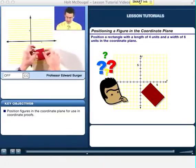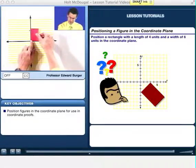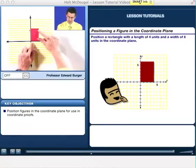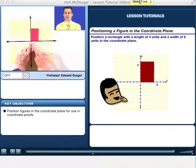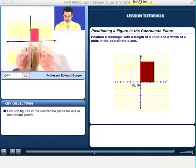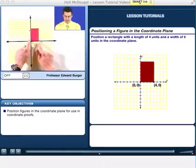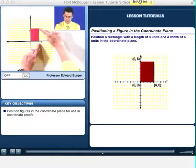For example, I could have one of the vertices actually be located at the origin, at 0, 0. Then this vertex would be located at 4, 0. This vertex would be located at 0, 6. And this vertex here would be located at 4, 6.